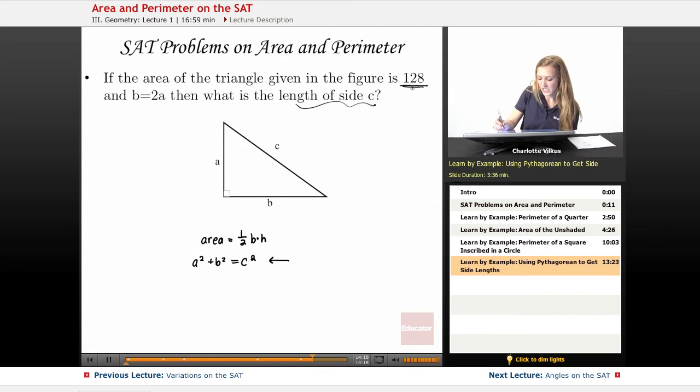So from the first one we can get a little bit more information about A and B. So here we can plug in 128 because that's our area, and it should equal one half times B times A. And the other thing we know is we know that B is equal to 2A. So we could substitute this part in for 2A, and if we do that, then we get that 128 equals one half times 2 is just going to give us 1. A times A is going to give us A squared. So we can actually get then that A is equal to the square root of 128.